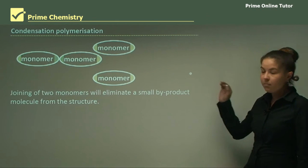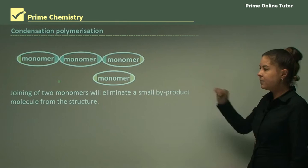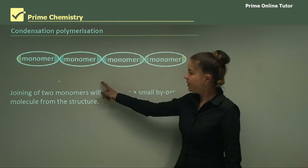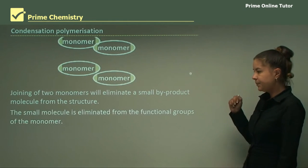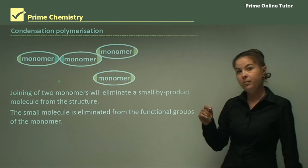How this works is monomers come together and a small byproduct will be eliminated, as you can see from this diagram. The small molecule is eliminated from the functional groups of the monomer.